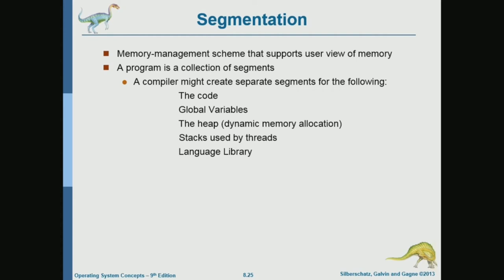With paging, you just divide or slice the address space of a process into equal pieces called pages. Pages have equal sizes, and segments have unequal sizes. Each segment may have a different size because each segment has a different purpose and meaning, while paging is just a slicing — you slice up the address space of a process into equal pieces.